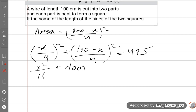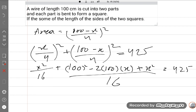x square upon 16 plus (100 square minus 2 times 100 times x plus x square) upon 16 is equal to 425. The LCM is 16, so x square plus 10,000 minus 200x plus x square is equal to 425 times 16.